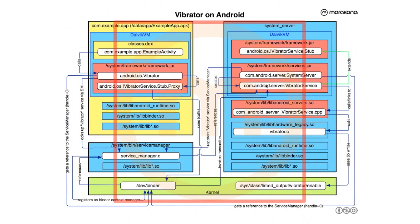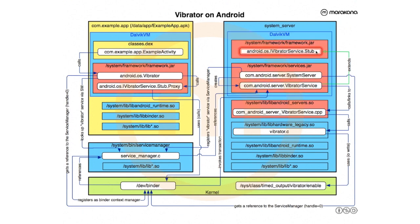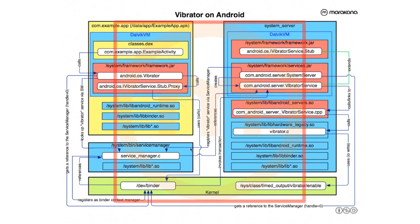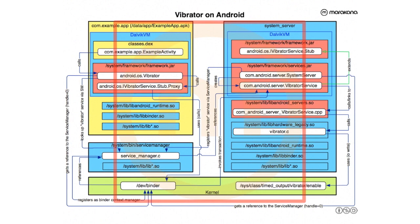There are 60-plus services, most coming from the system server. One of the services it instantiates is the Vibrator service. The Vibrator service implements an IVibrator AIDL interface, which compiles to a Java interface, and particularly implements a Stub. Once instantiated, the Vibrator service gets registered with the service manager. The system server boots all services, then tells the ActivityManager service it's done — which sends the boot-completed event, launches the home screen launcher, and the system is booted.